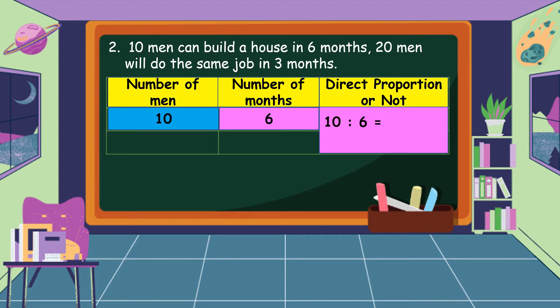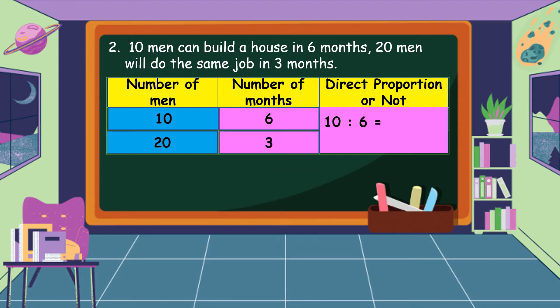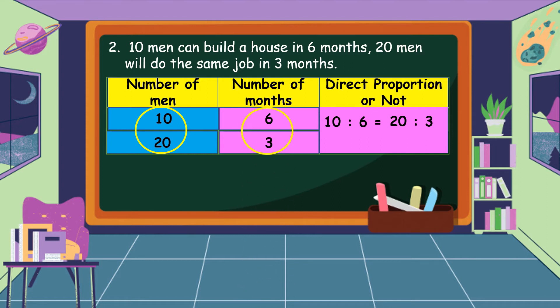For the second statement, 20 men will do the same job in 3 months, so our second ratio is 20 is to 3. Kindly observe the number of men and the number of months. As the number of men increases, the number of months decreases. So, is this a direct proportion or not? No, this does not show a direct proportion.